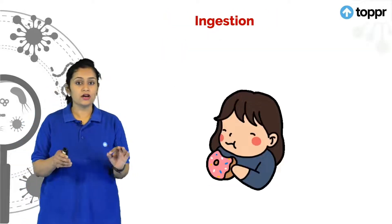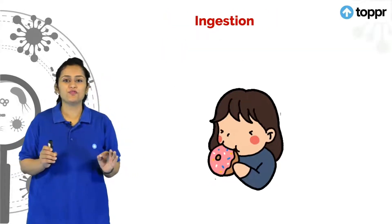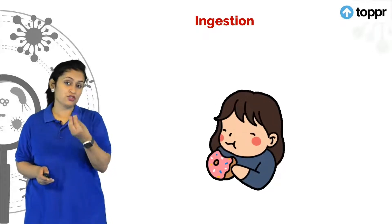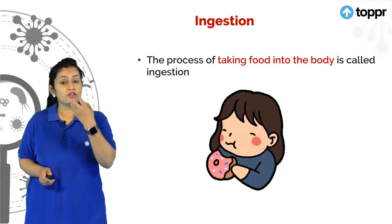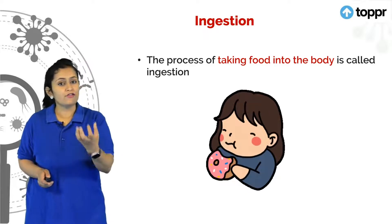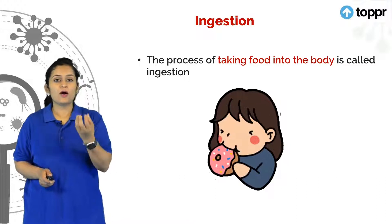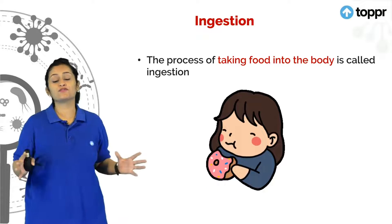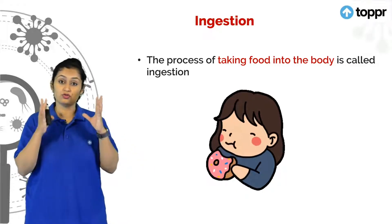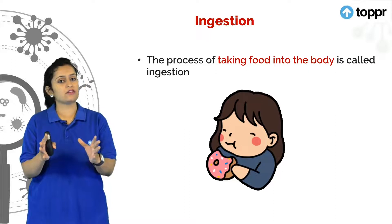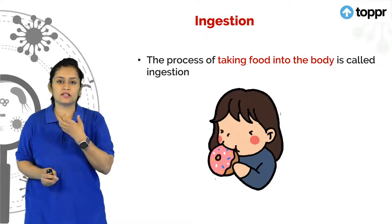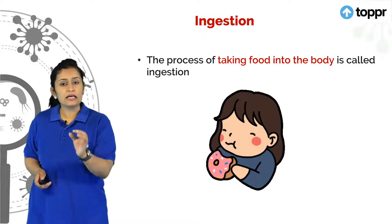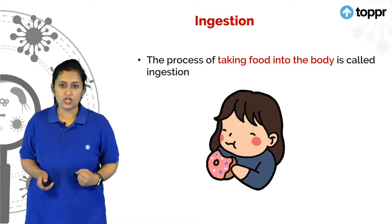First, ingestion. In ingestion, whenever we are hungry, we take food and just put it in our mouth. By doing so, you are actually putting food into your body — it's like inserting fuel. For us, the fuel is the food. The complex food that we eat gives us energy, and to obtain that energy, the first thing we have to do is ingest it. So simply, ingestion is the process of taking food into the body.